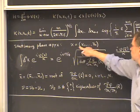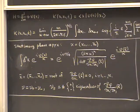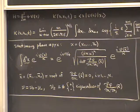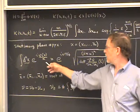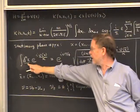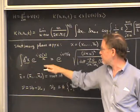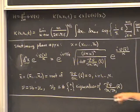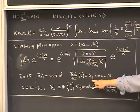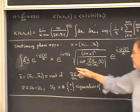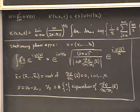The variable x here ranges from x1 to xn, so it's in n dimensions. The basic idea of the approximation is that the integral is dominated by the regions of x around which the phase phi is stationary. The stationary phase point is defined as the one where the gradient of phi is equal to zero, and we call that x-bar. The basic idea is to expand the exponent around the stationary phase points, carrying that to second order into a Gaussian integral.